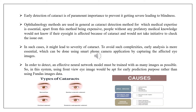According to World Health Organization reports, cataract is found to be the cause of vision impairment in over 62.5 million people. Studies show that age-related reasons are more generic in most cases of cataract, especially nuclear and cortical cataract. Early detection is of paramount importance to prevent it getting severe and leading to blindness. Ophthalmology methods used for cataract detection require medical expertise and are expensive. To avoid such complexities, early analysis using a smartphone camera application by capturing the affected image is more practical, making this front-eye image system suitable for early detection.